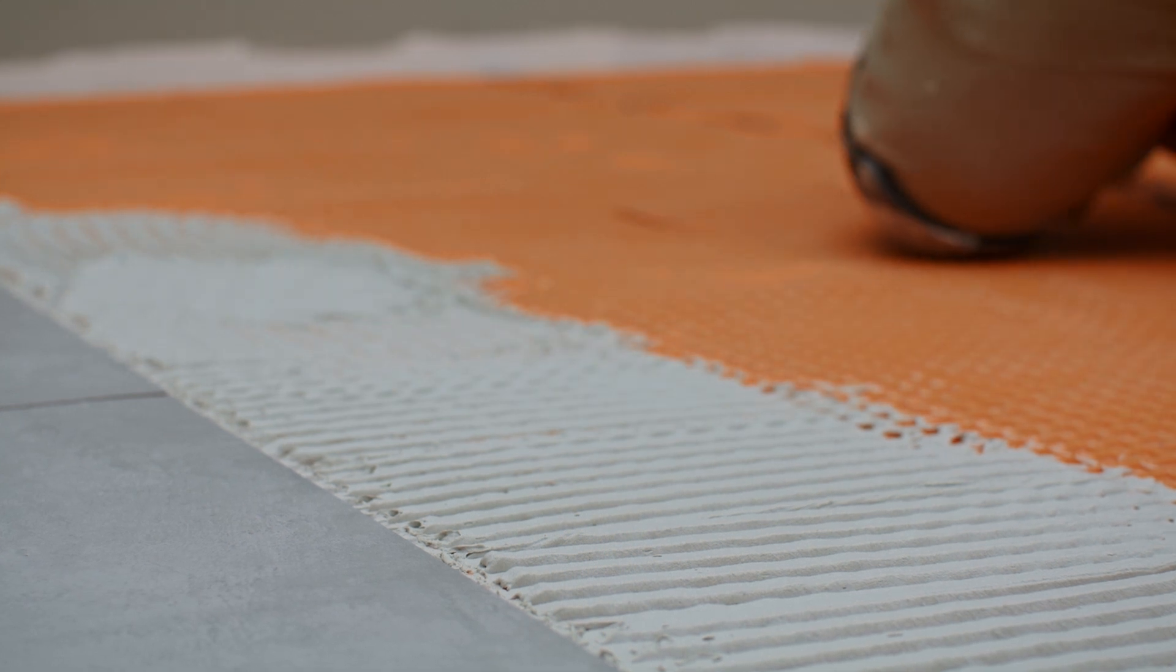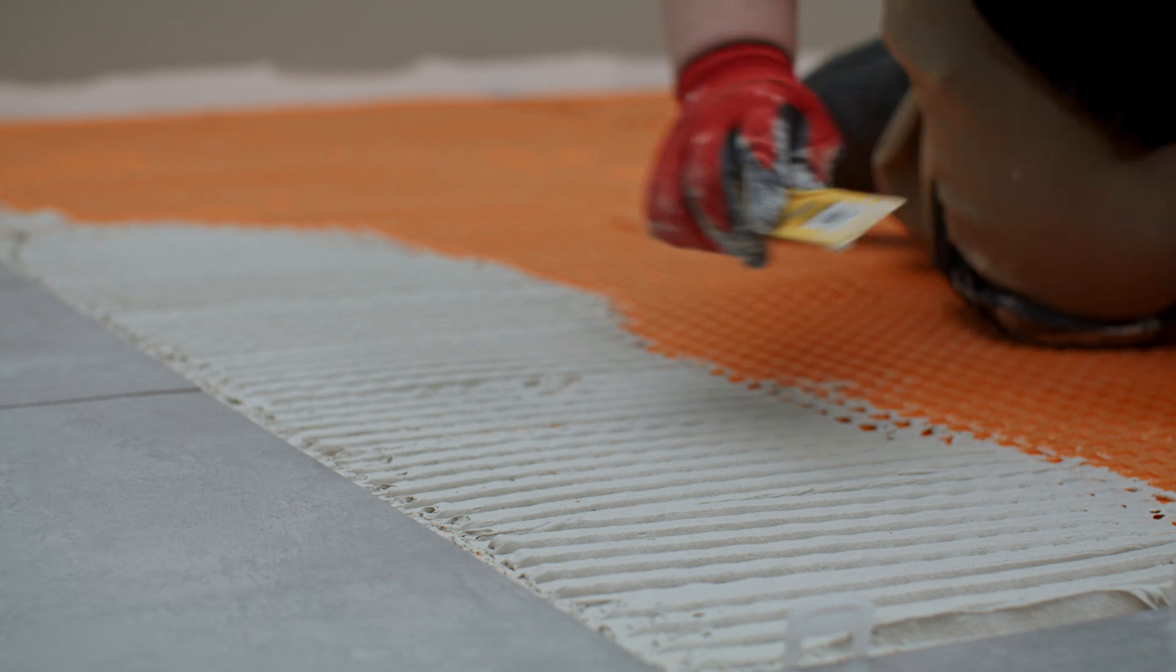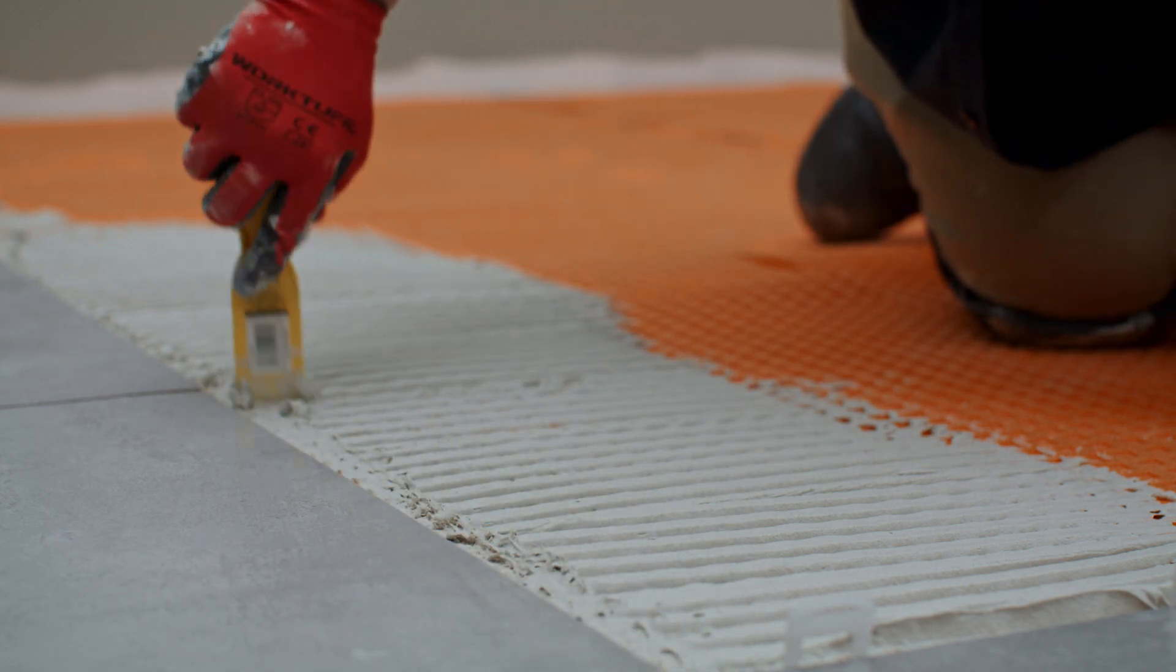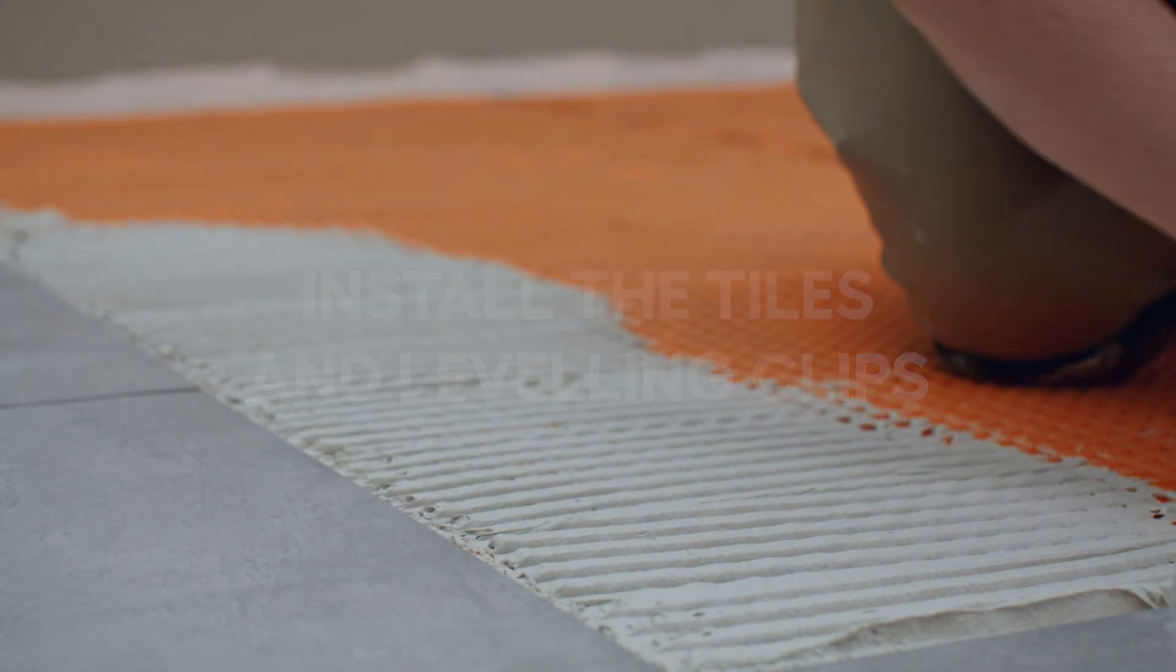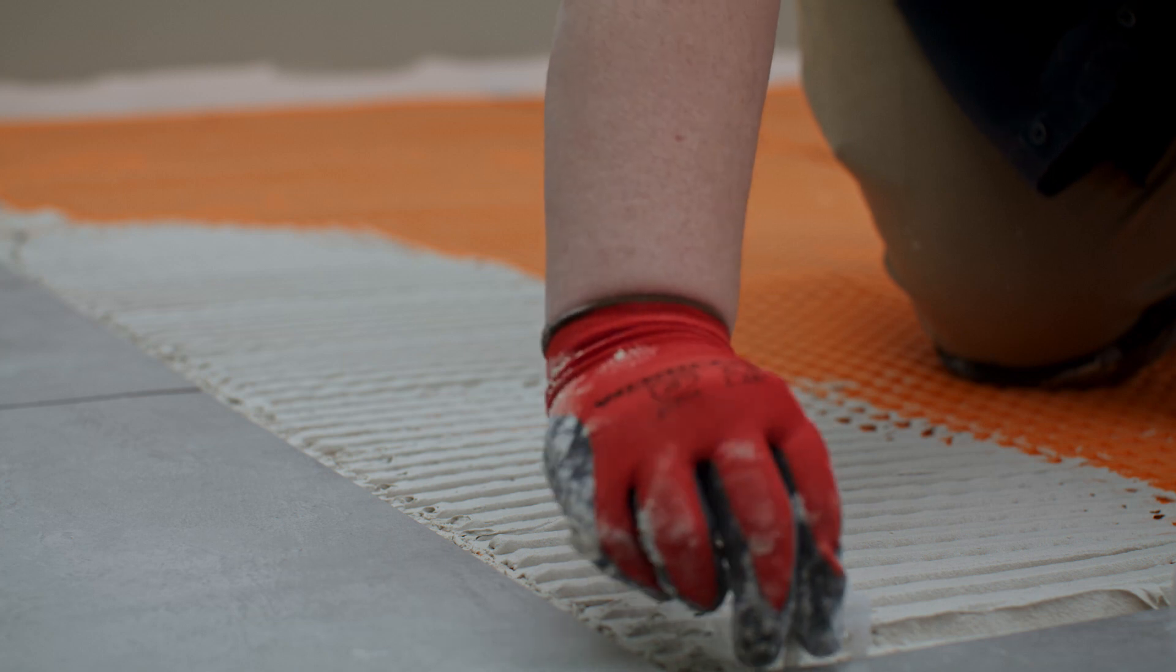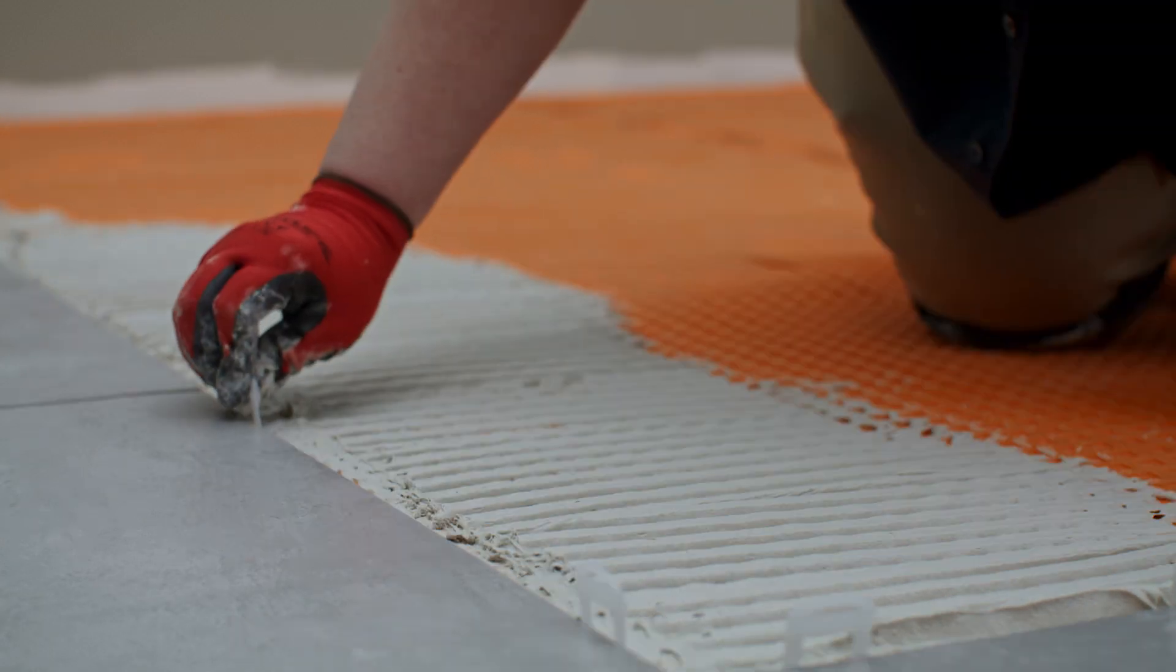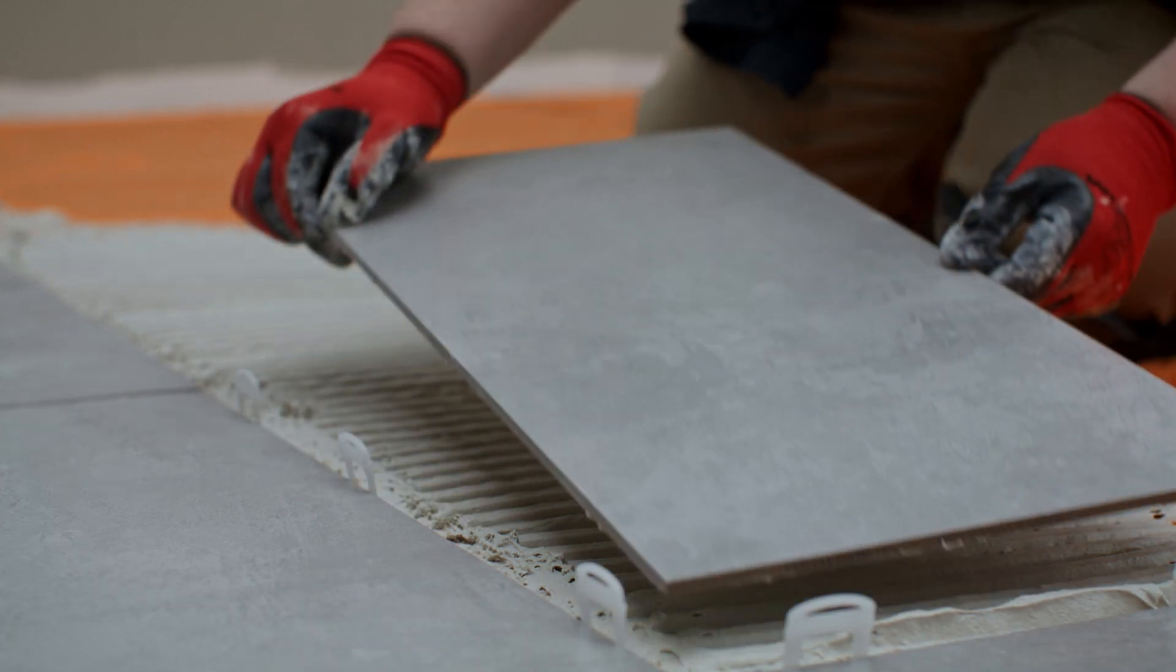We'll be laying the tiles one at a time and installing leveling clips as we go. Before you add clips or lay additional tiles, make sure to remove excess mortar. Now, slide two leveling clips beneath your tile so they're firmly embedded in the mortar. Place these clips about two to three inches from the corners. If you're using larger tiles, you might need to use three clips per side.